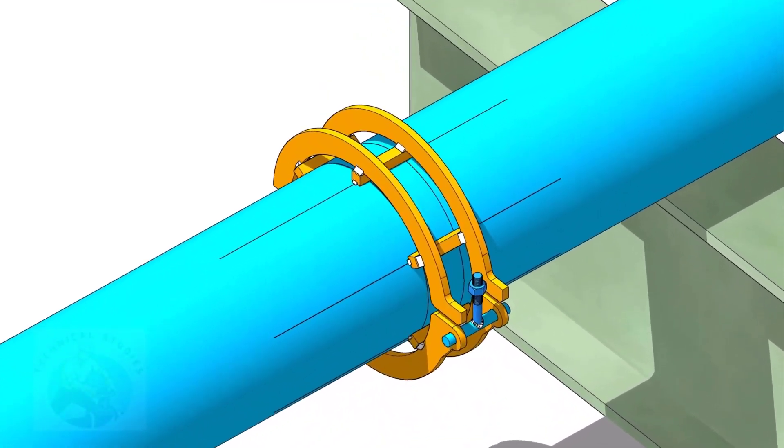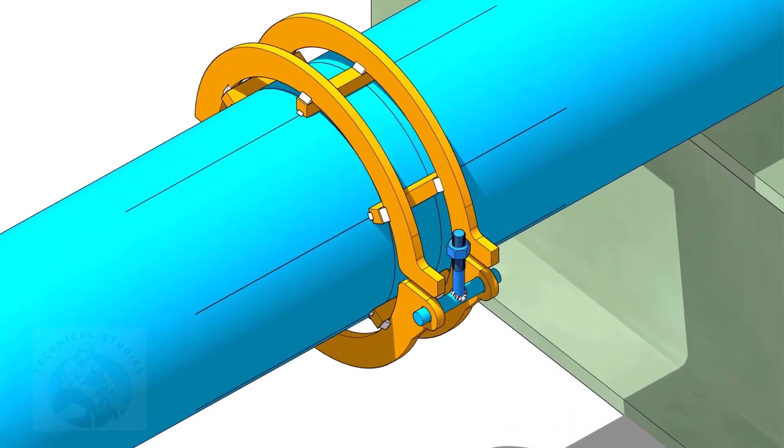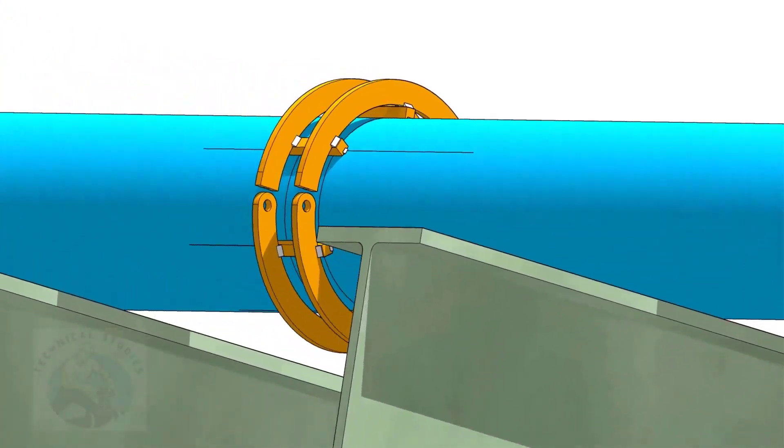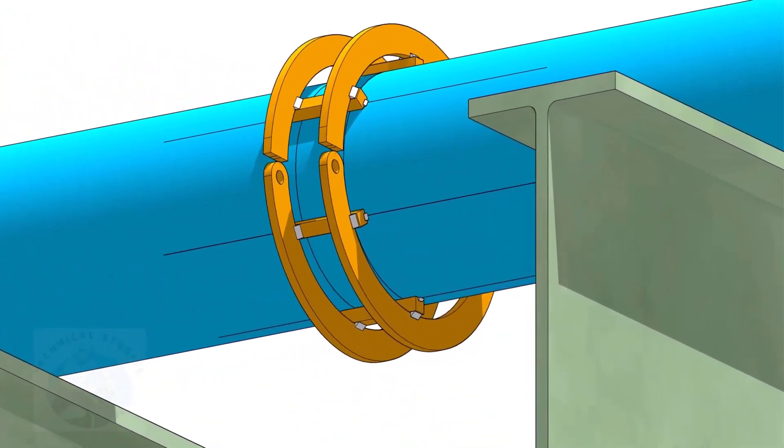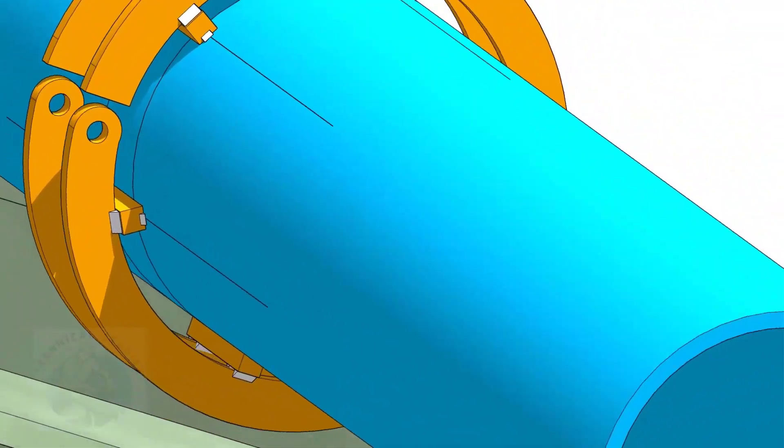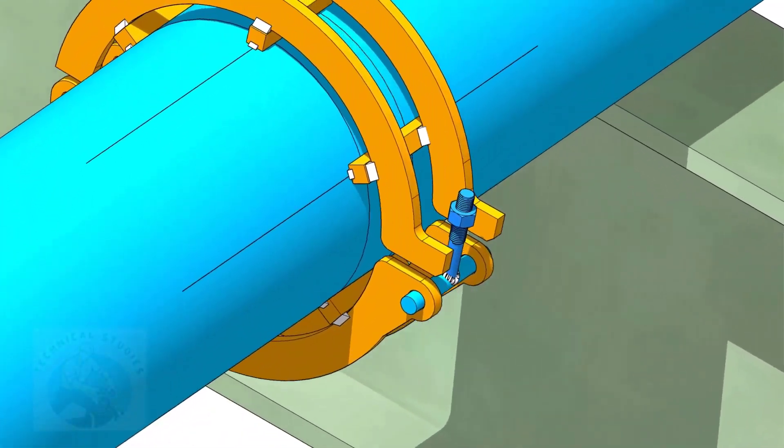Tack weld the bottom rings also. Put the lock bolt before tack welding these rings. First, put the bolt and the hinge plates, and tack weld the hinge plates with the top rings.